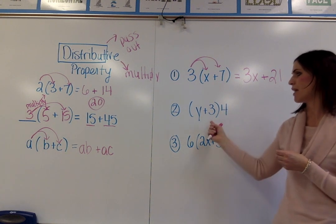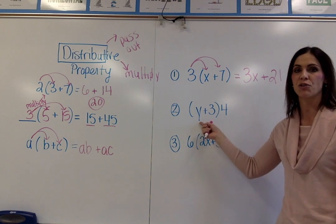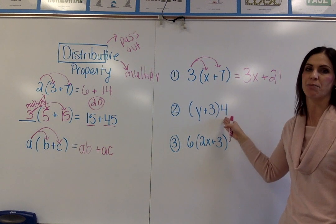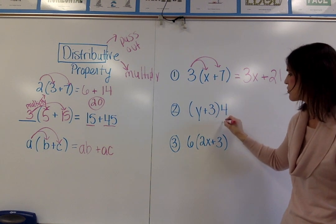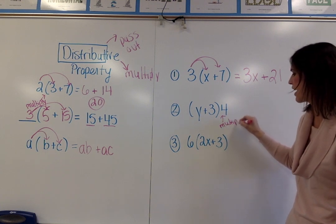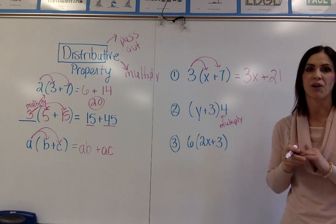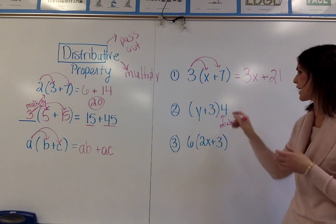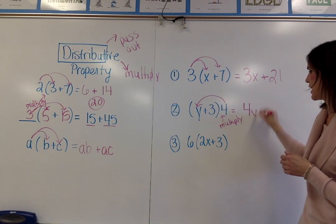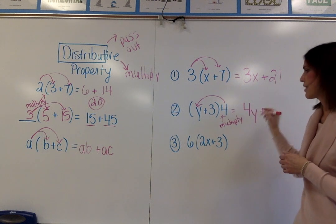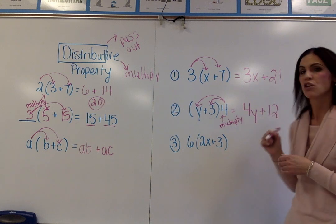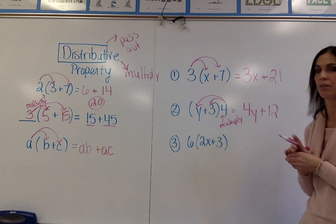In my next example, I have the set of parentheses first, Y plus 3, and the number I'm going to multiply is actually to the right side of the parentheses. Since it's still written next to the parentheses, it still is telling you to multiply. It's just at the back and not in the front. But you're going to do the same thing. I'm going to multiply 4 times Y, which is 4Y, plus, and then I also have to multiply 4 times 3, which is 12. So my equivalent expression is 4Y plus 12.